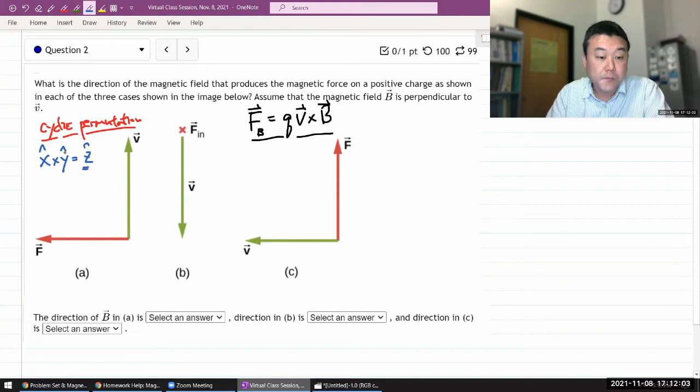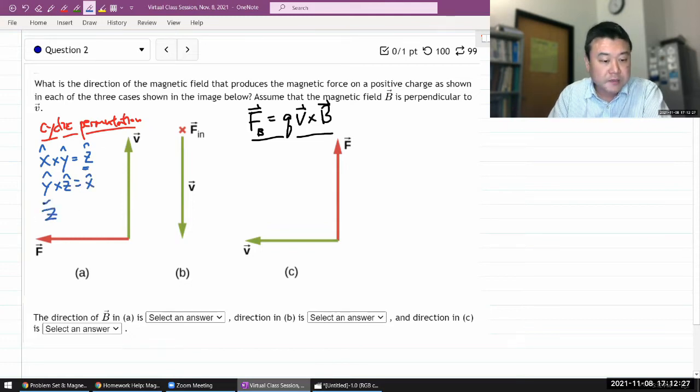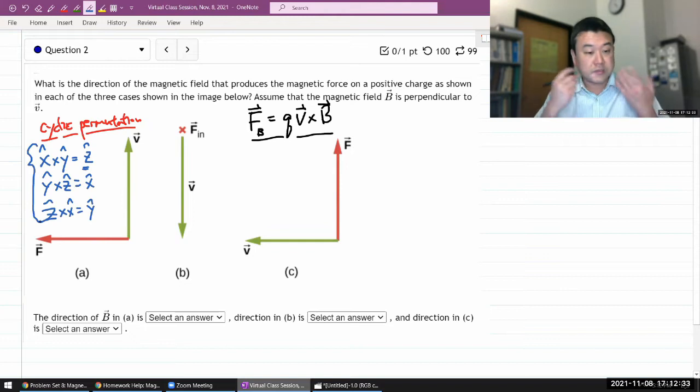then you can permute these elements cyclically and still get the same equality. So, let me imagine moving them all over to the left by one slot, and then at the leftmost point, I just cycle it over to the rightmost point. Then we would have y-hat cross z-hat equals x-hat. And cycle it one more time. We have z-hat cross x-hat equals y-hat. And all these are related through cyclic permutation.